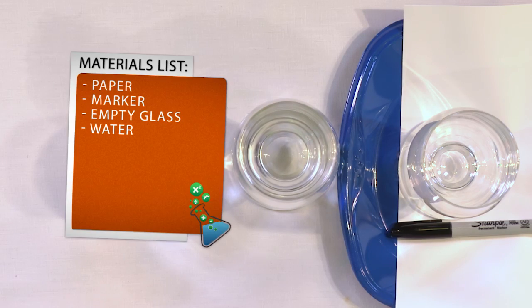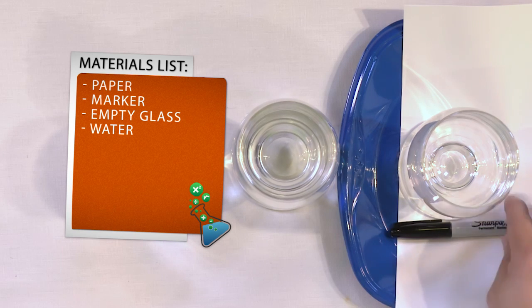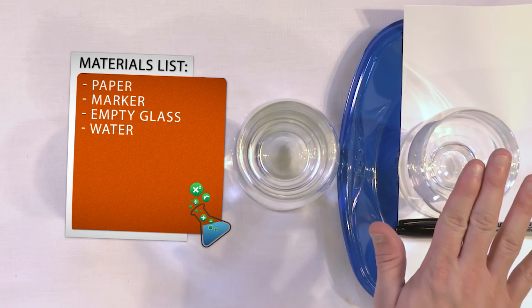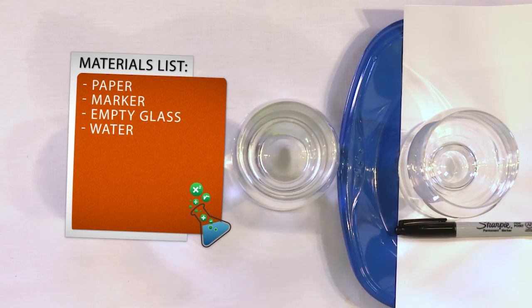So all you'll need for this experiment is a piece of paper, some sort of marker, some sort of permanent dark marker, an empty glass, and a glass of water.